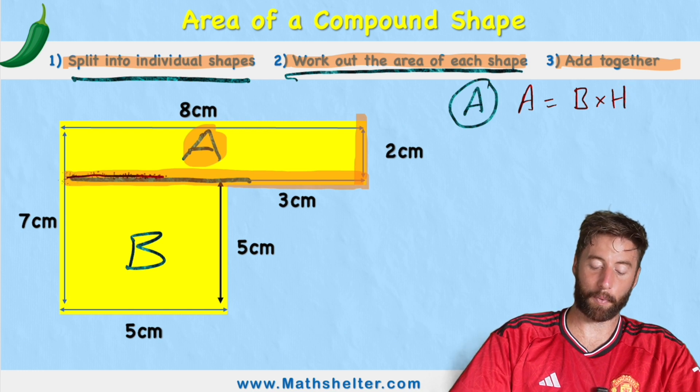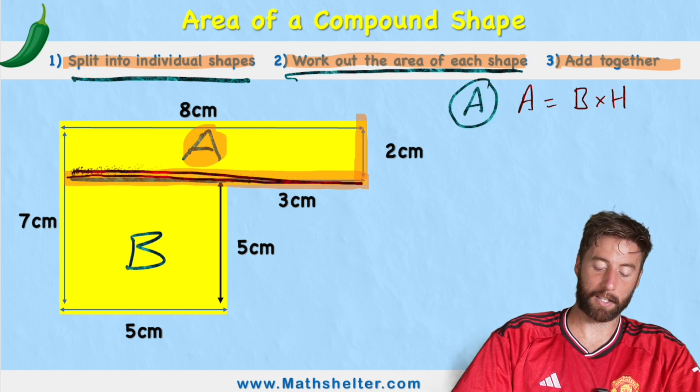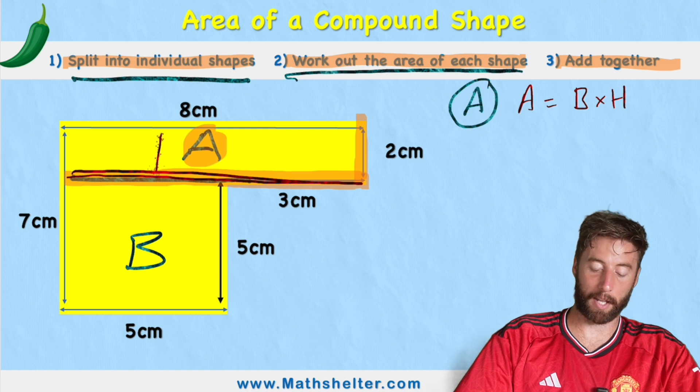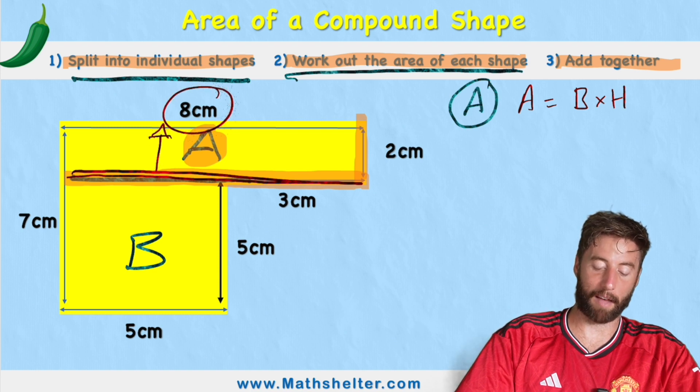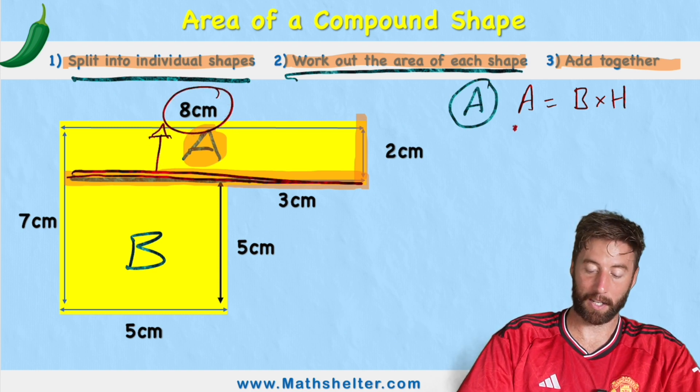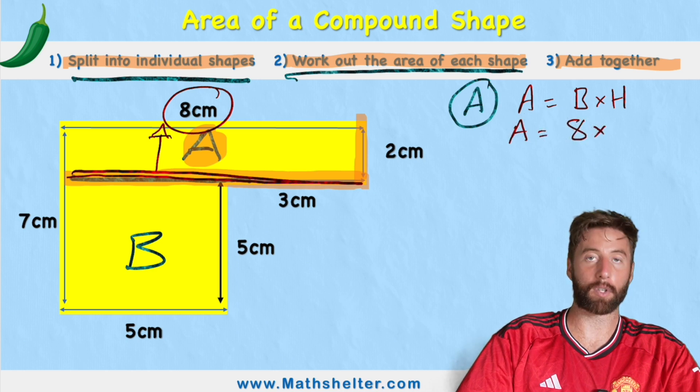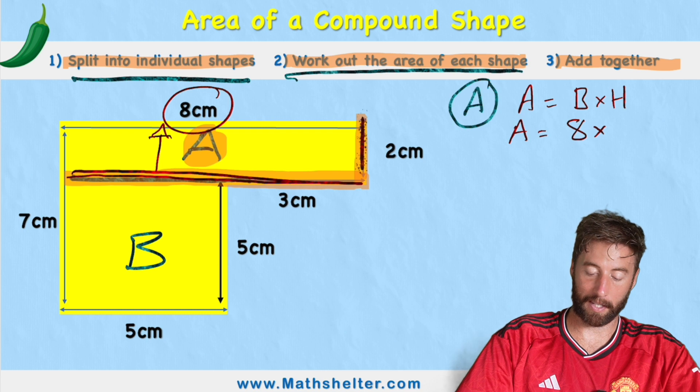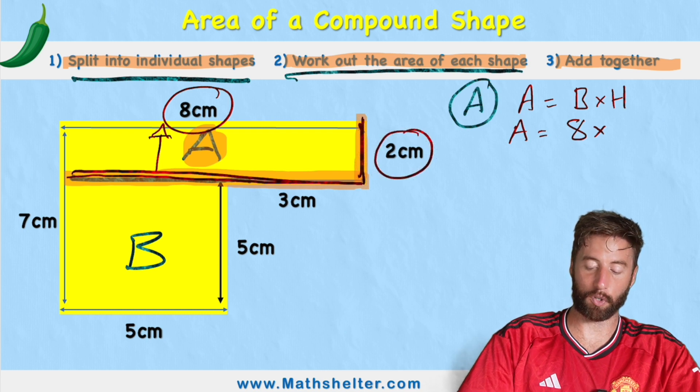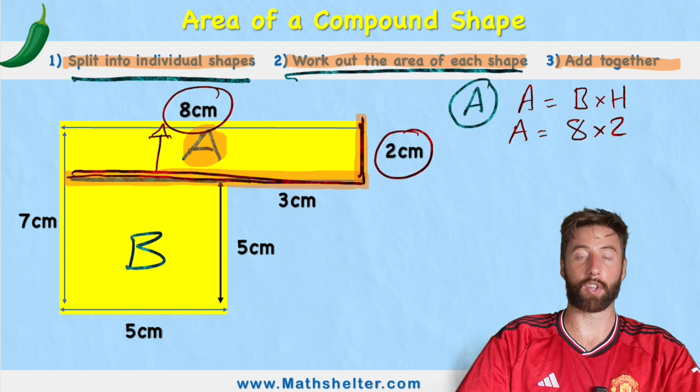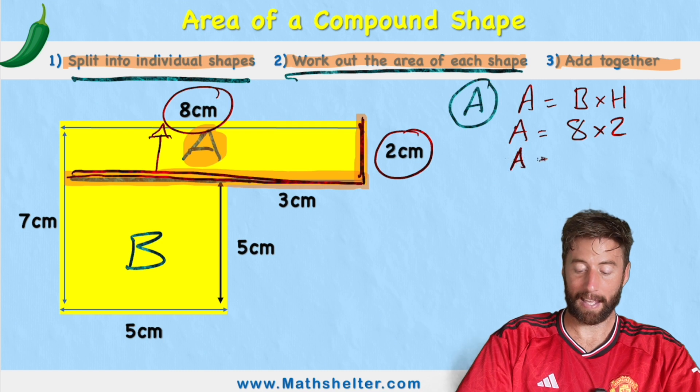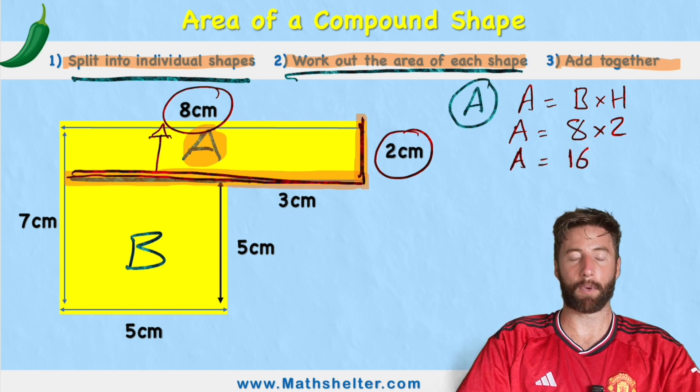So in this case, if we look at this measurement across the base, how do we find out its measurement? Well, let's look opposite and we can see that we have 8 centimeters. So we have area equals 8 times, and what's its height? We can see we have the height over here of 2 centimeters. So the area of shape A is 8 times 2, which is 16. But 16 what?